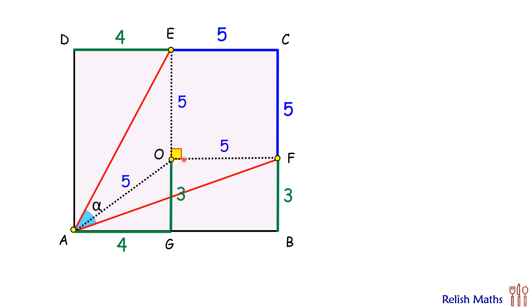So from point O, F, E, and A are 5 cm away. So if we'll draw a circle from point O of radius 5 cm, it will pass through E, F, and A.